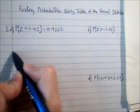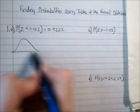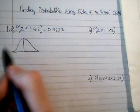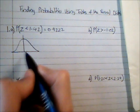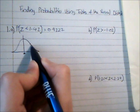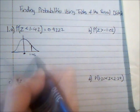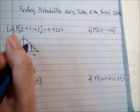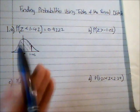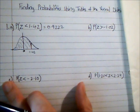I can also do a sketch of the normal distribution. The mean is in the middle with a Z value of 0, and 1.42 is to the right. The probability that Z is less than 1.42 represents the large area to the left of that point, which is 0.9222.